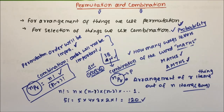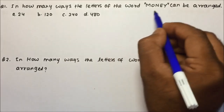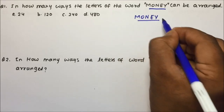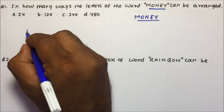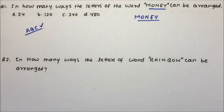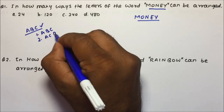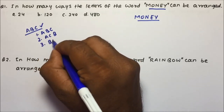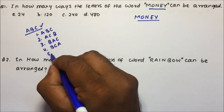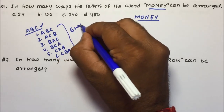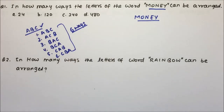Now let us do one problem to understand what exactly will be the question in permutation and combination. Question 1: in how many ways can the letters of the word MONEY be arranged? Let me give a simple example first. In how many ways can the letters of the word ABC be arranged? We can have: ABC, ACB, BAC, BCA, CAB, CBA — so there are six ways the letters of the word ABC can be arranged.